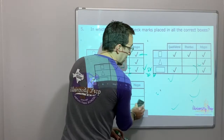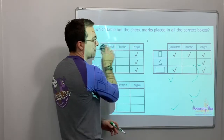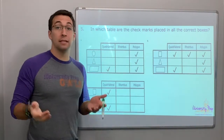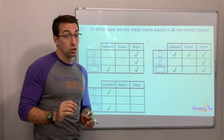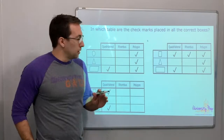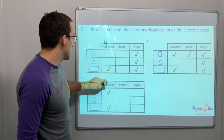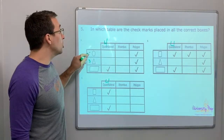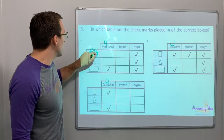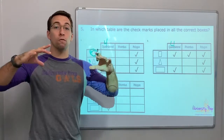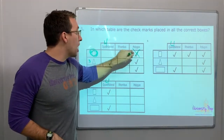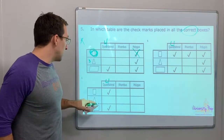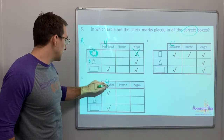Next question — again, shape analysis with a lot to look at. Be careful and slow down. It says: in which table are checkmarks placed in all the correct boxes? You're looking for the good checks, not the bad checks. Quadrilateral means four sides. Look — this is not a polygon because a circle is not a polygon; it has a curve. So answer A is wrong.